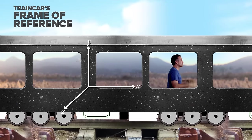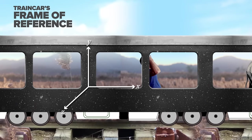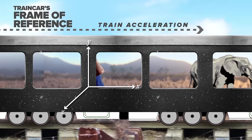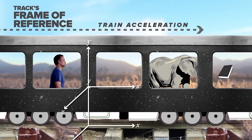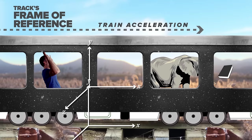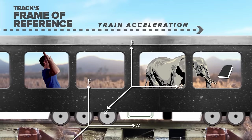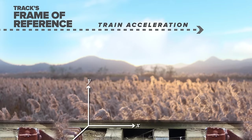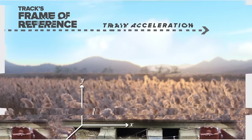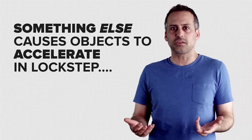Let's look at things from the train car's frame of reference a little more carefully. Inside that accelerating train car, not only does everything accelerate backward for no apparent reason, everything accelerates backward together. You, a book, and an elephant will all lurch toward the back of the car with the same acceleration. From the preferred point of view of the inertial frame attached to the tracks, you, the book, and the elephant are all stationary, and it's only the train car that actually accelerates forward to intercept you.